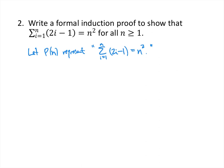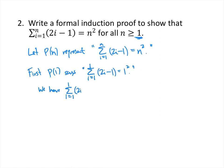We're going to prove this by induction with a base case and an induction step. The base case is n equals 1. P of 1 says the sum as i goes from 1 to 1 of 2i minus 1 equals 1 squared. That sum has only one term — 2 times 1 minus 1, which is 1. The right-hand side is 1 squared, which also equals 1. So P of 1 is true.